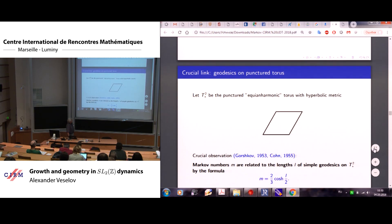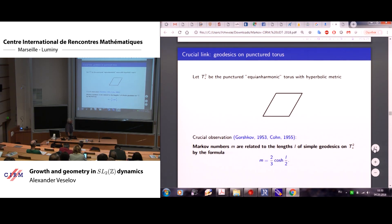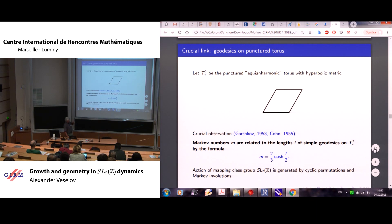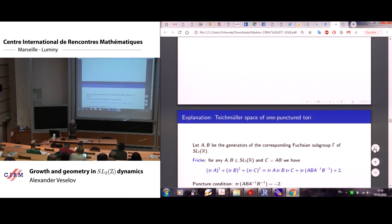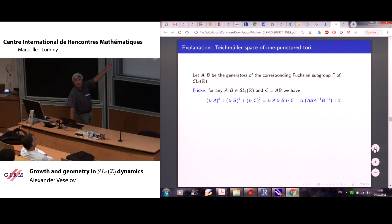So this is a crucial observation I'm talking about. If you can see the closed simple closed geodesics on this hyperbolic punctured torus, then it's simply related to Markov numbers. Namely, cosh of half the length is two theta, and then you have, so this is observation of Korschkov and independently by Kohn. Corresponding mapping class group, SL(2,Z) is acting by cyclic permutation and Markov involution. So action, natural action of SL(2,Z) on the torus and on the Markov equation and Markov numbers, they are exactly the same. So basically there is one-to-one correspondence.